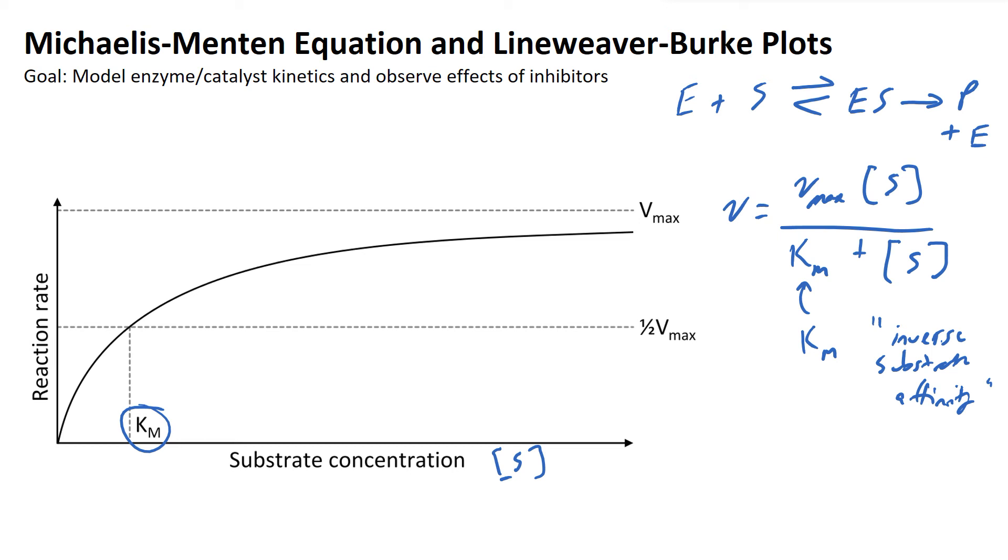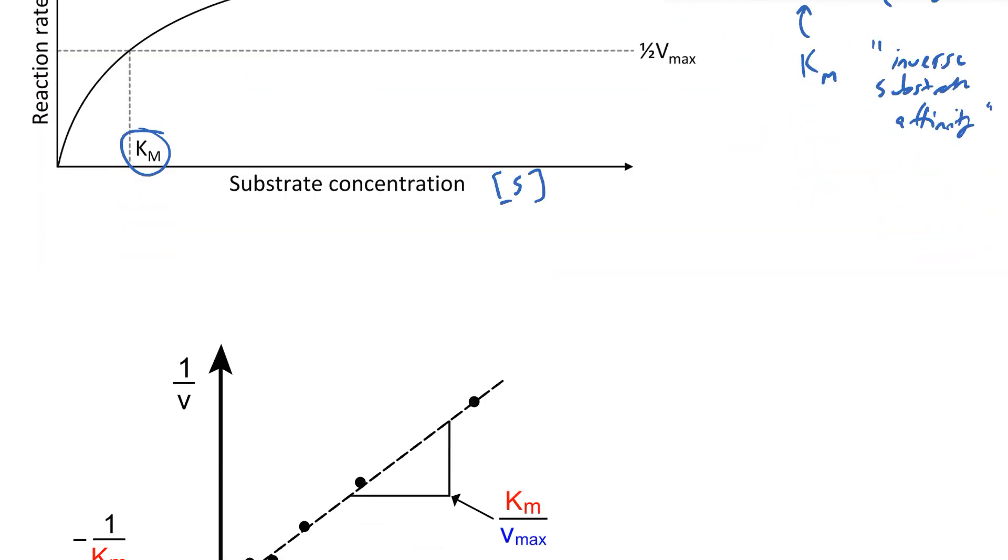Now that we've done this, another thing that people commonly will do is take the double reciprocal of this plot. So reaction rate, which commonly you'll see denoted as V, if you take the reciprocal of this, which is 1 over that thing, and you do the same thing for substrate concentration, you create this thing called a Lineweaver-Burke plot.